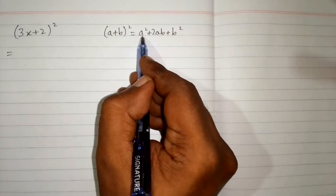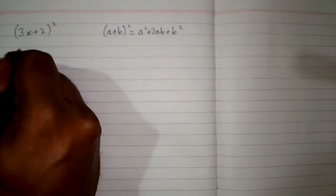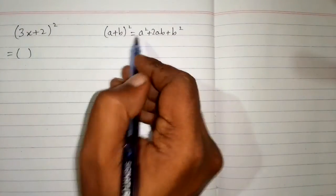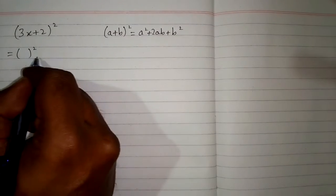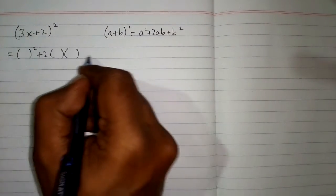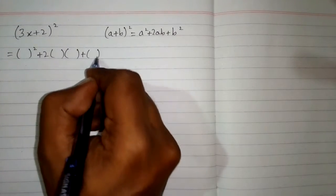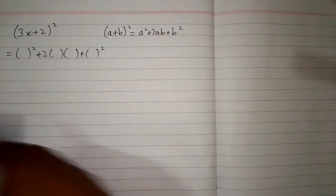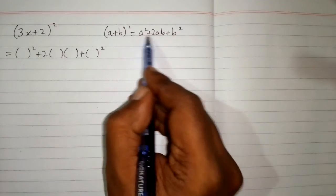So first we will write the structure of this formula. So we will put bracket in place of a so we have this a square plus 2ab plus b square. We can put bracket in place of a and b.